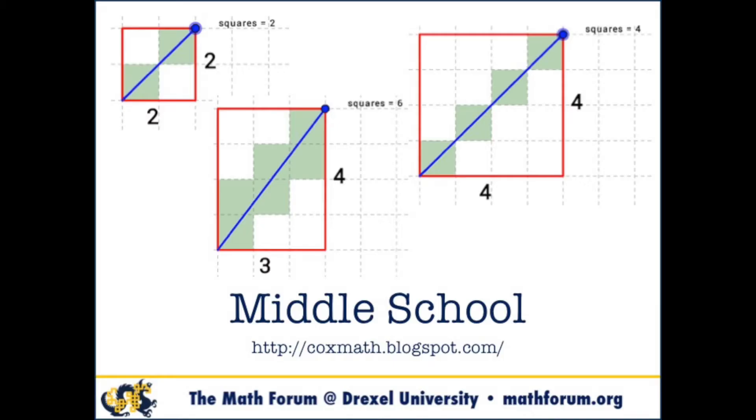A middle school teacher I know, David Cox, gave his kids a really cool open middle problem. He asked, if you draw a rectangle on graph paper, and you draw a diagonal, how many of the squares will the diagonal go through? And the way his students tackled it was really interesting.